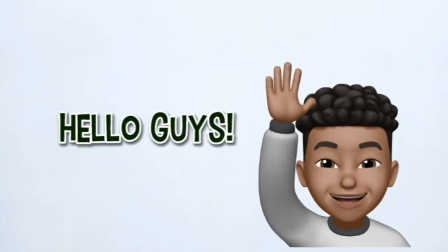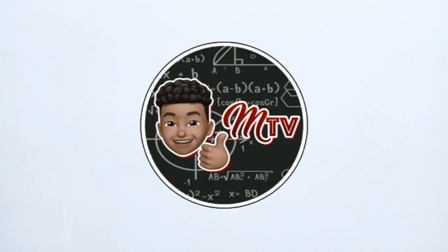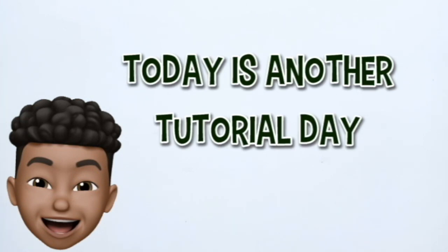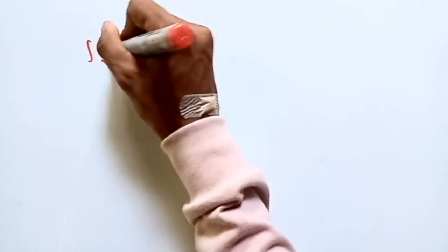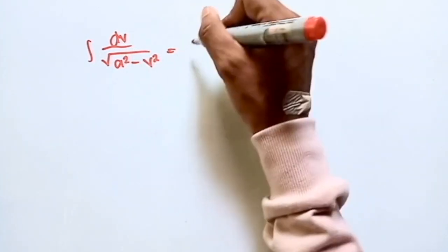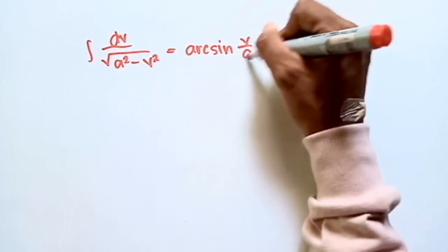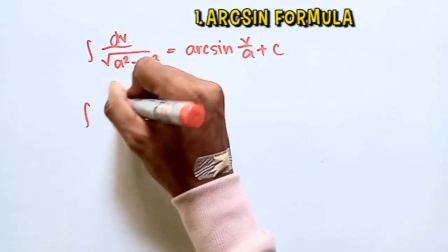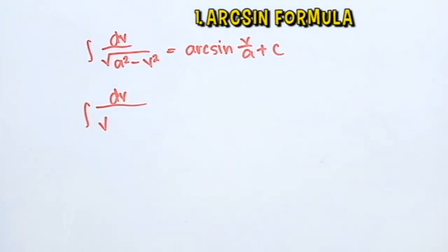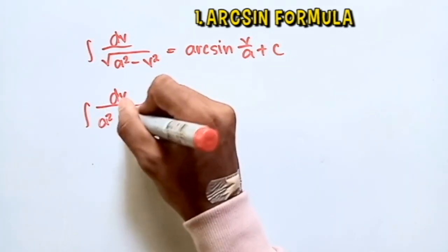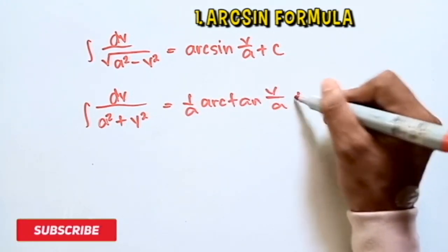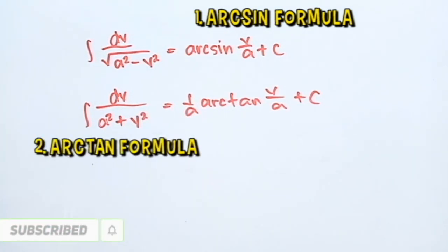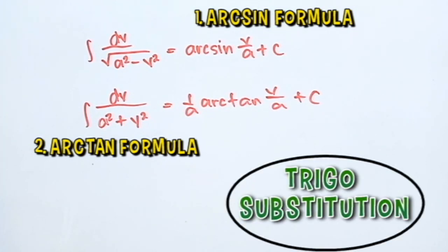Hello guys, what's up, welcome back to my YouTube channel Mathematic TV. So today is another tutorial day. I'm going to talk about the formulas we used last time in integrating inverse trigonometric functions: the integral of dv over the square root of a² minus v² equals arcsin(v/a) + c, and the integral of dv over a² plus v² equals (1/a) arctan(v/a) + c. I will now provide a solution for these integrals using trigonometric substitution.